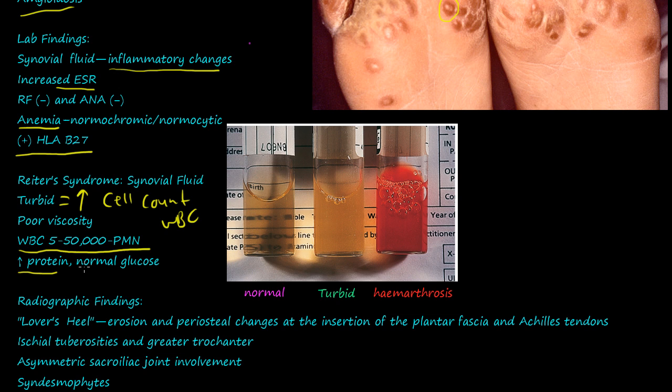Looking at synovial fluid samples: normal fluid is clear — you can still see letters behind it. Turbid fluid is cloudy or opaque because there are more cells and proteins, and it is less viscous. A third type is blood in the joint, called hemarthrosis. If you aspirate synovial fluid and it's bloody, you have hemarthrosis, which can indicate a whole range of problems.